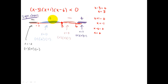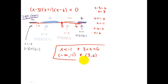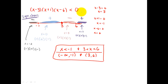You'll notice in this sign chart it went negative, positive, negative, positive. Don't get in the habit of thinking that it always switches — it does a lot of the time, but not always. So you want to check each of the regions individually. Now let's answer our question: when is this less than zero? I just look for the negative regions. That happens when x is less than negative one, and also when x is between three and six. Another way to write this is from negative infinity to negative one, and between three and six. That is my solution.